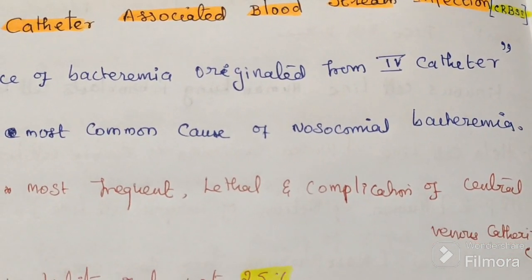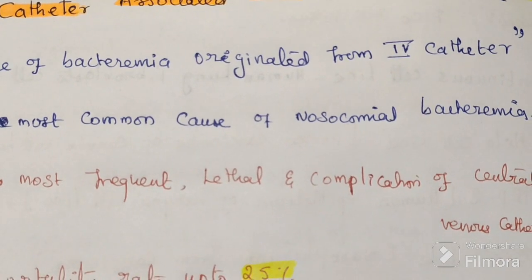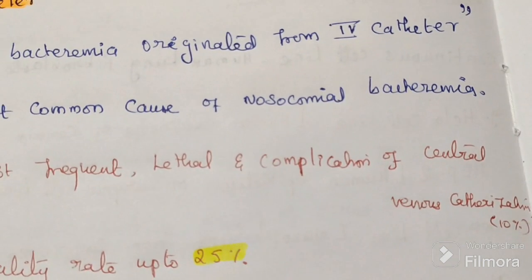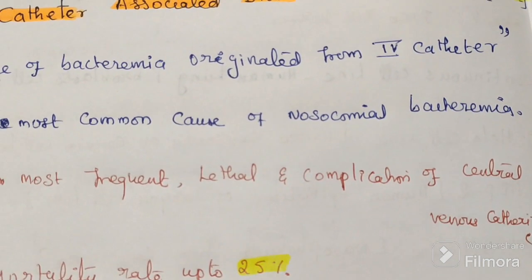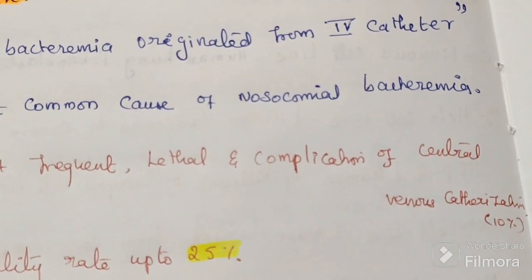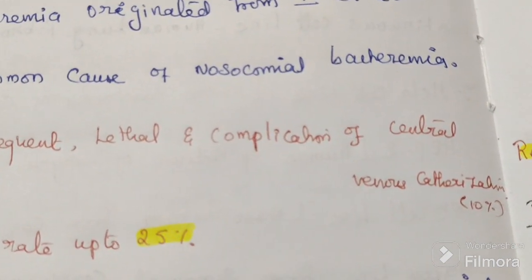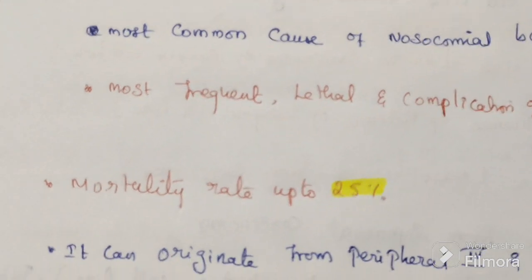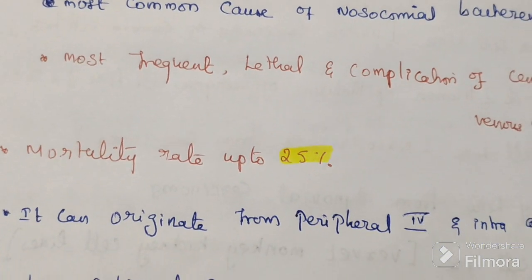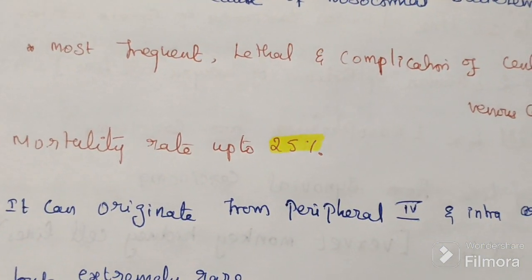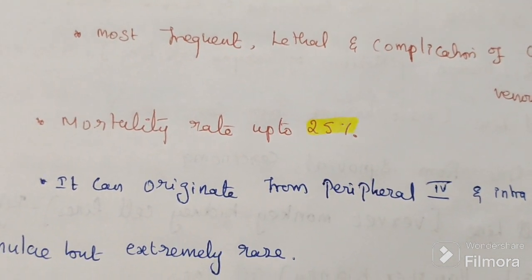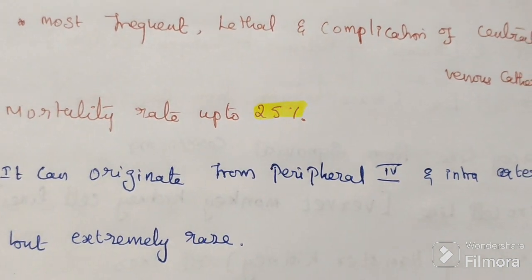It is the most frequent, lethal, and very harmful complication of central venous catheterization. The incidence of catheter-associated bloodstream infection arising from central venous catheter is approximately 10%. It has a mortality rate of up to 25% and significantly increases hospital length of stay and overall treatment cost.